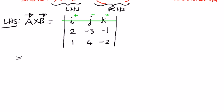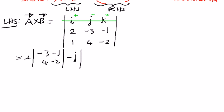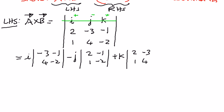The way to expand that is: i times the minor, which is negative 3, negative 1, 4, and negative 2; minus j times the minor, which is 2, negative 1, 1, negative 2; and then plus k times the minor, which will be 2, negative 3, 1, and 4.